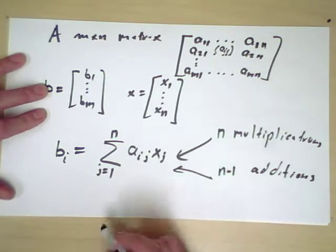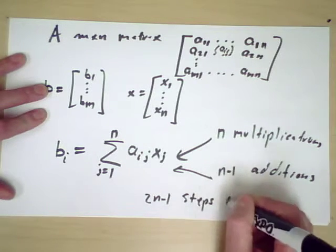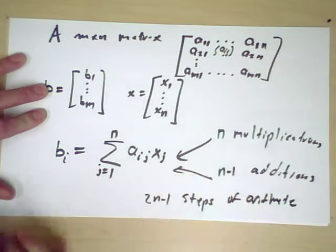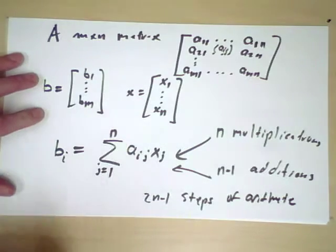So overall I have to do 2n-1 steps of arithmetic to compute each b_i. And of course then I have to do that for each i from 1 to m.